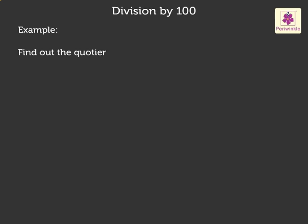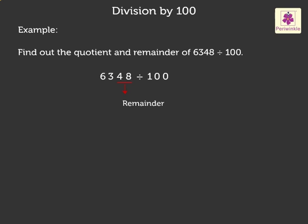Now, let us solve one more example without actual division. Find out the quotient and remainder of six thousand three hundred forty-eight divided by one hundred. We know that the digits in the one's and ten's place of the dividend form the remainder. Thus, here forty-eight is the remainder. Now, the remaining digits form the quotient. Thus, here sixty-three is the quotient.